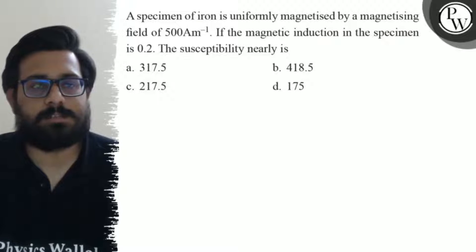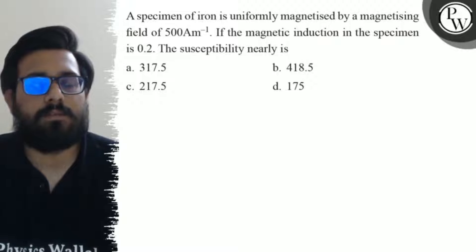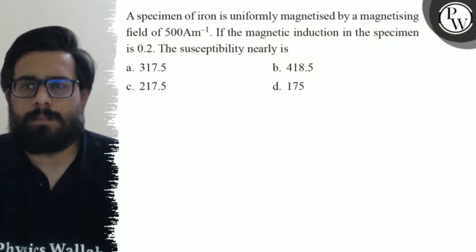Let's see the question. A specimen of iron is uniformly magnetized by a magnetizing field of 500 ampere per meter. If the magnetic induction in the specimen is 0.2, the susceptibility nearly is: